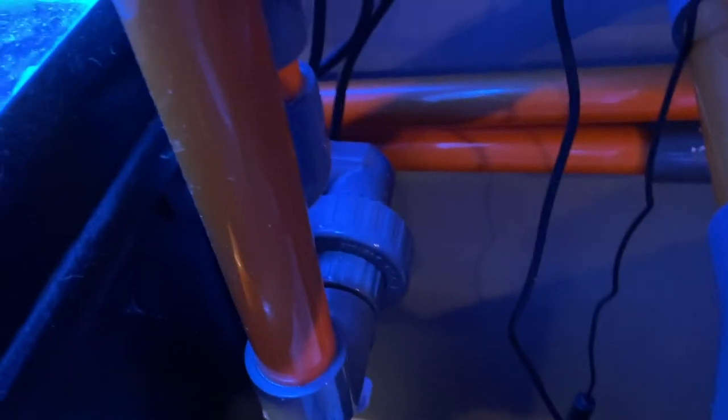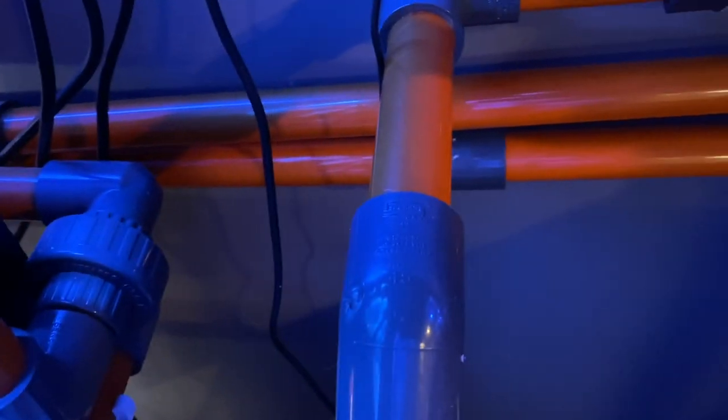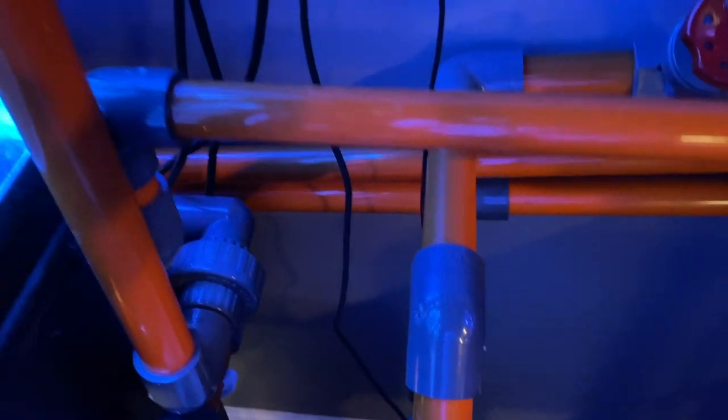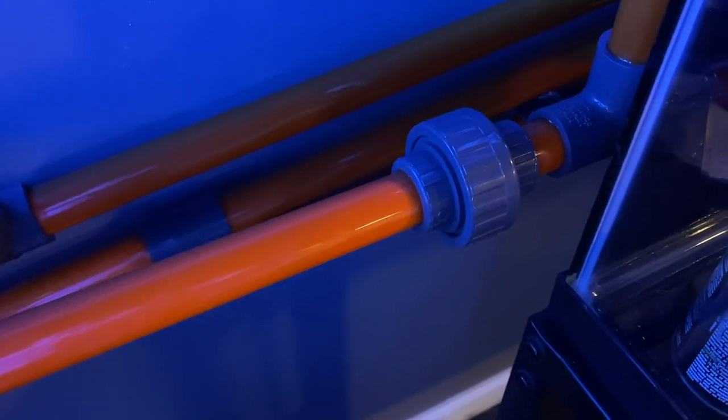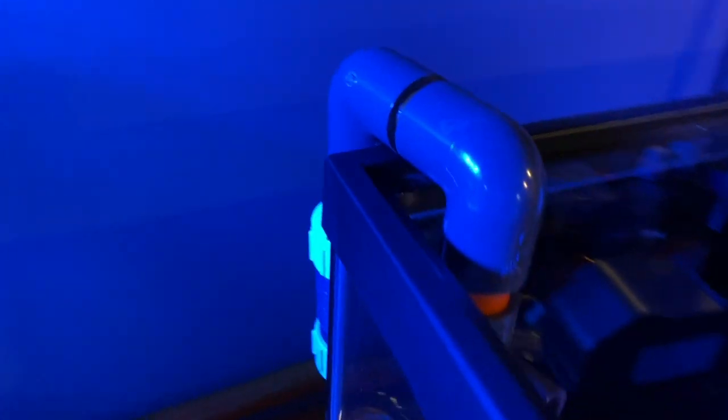Once I was done with the drains, it was time to work on the return line. The return line didn't have enough clearance to go underneath the drain line for the 40s, so I had to go up and over it with a couple 90s, and then shot across into a union, into a 90, up into a check valve, and a couple other 90s, and into the tank.